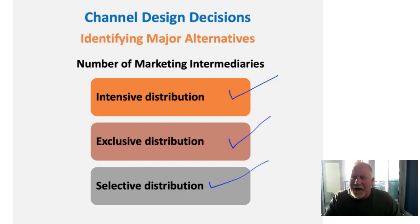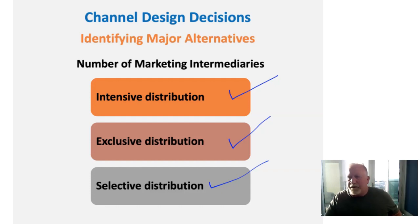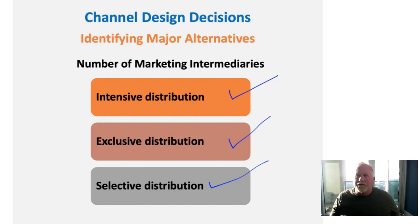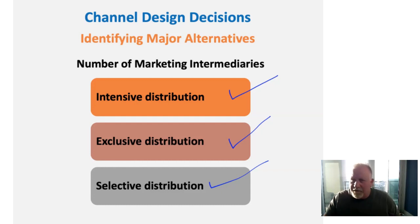There are a number of different types of major intermediaries in the marketplace. This pretty much covers the concept of channels at a fairly high level, and we'll revisit some of this as we move forward in the course. Supply chain is a huge area in Houston with a lot of jobs. I would look into the supply chain programs at the University of Houston if you're particularly interested. Thanks and have a great day, everybody.